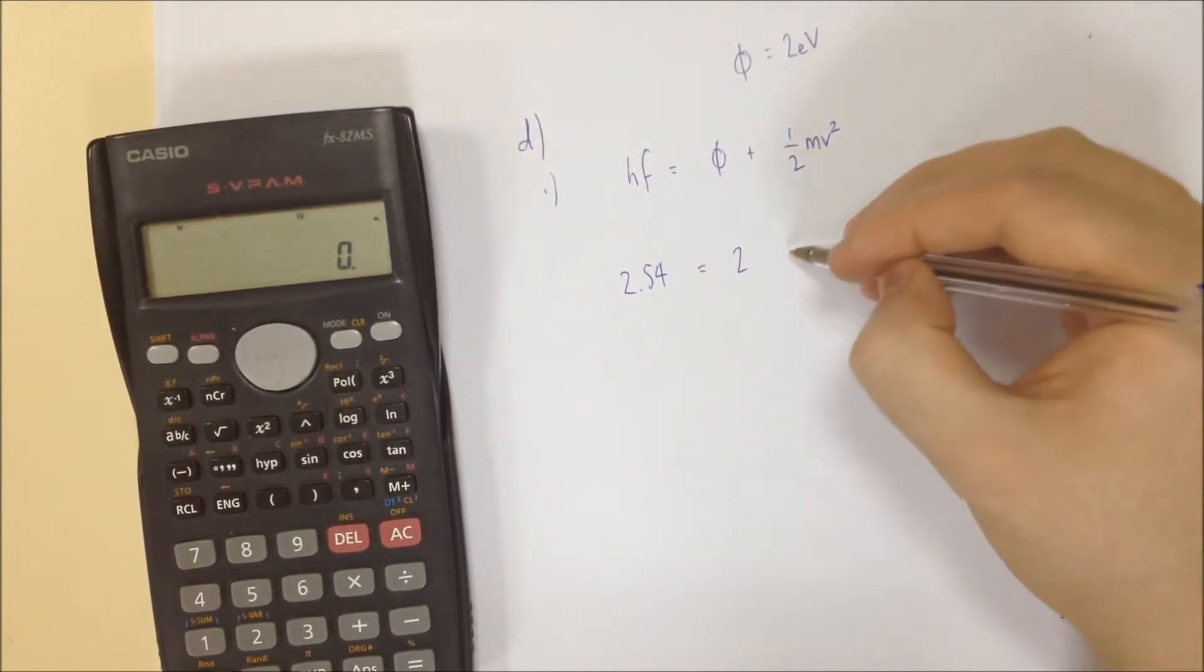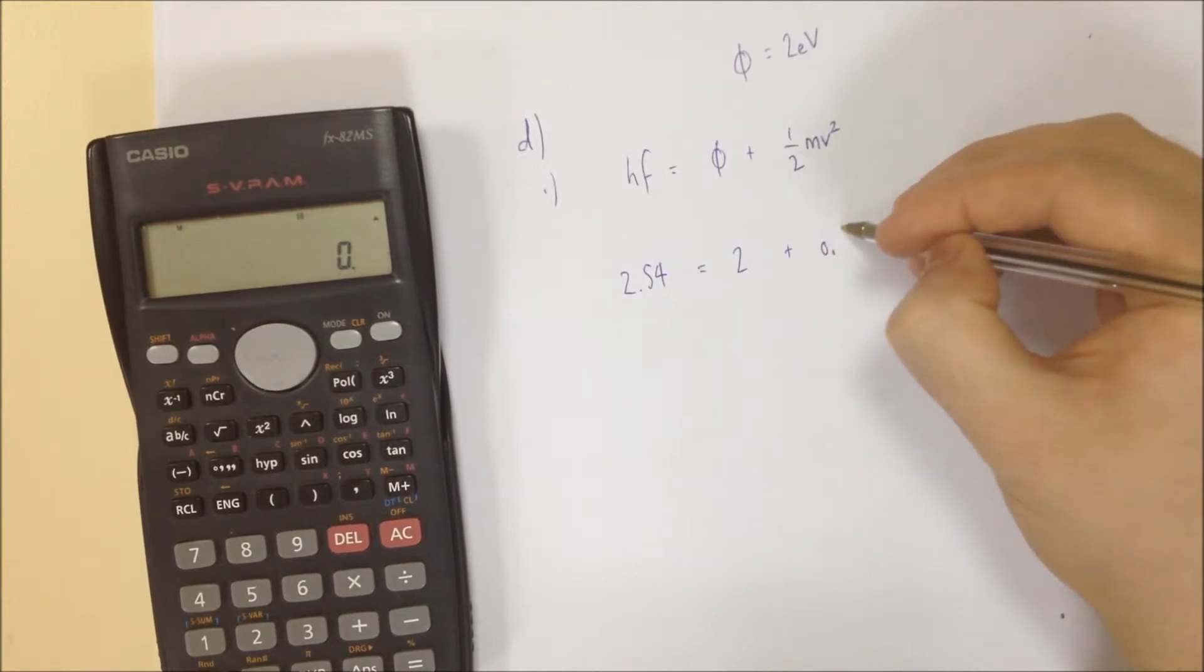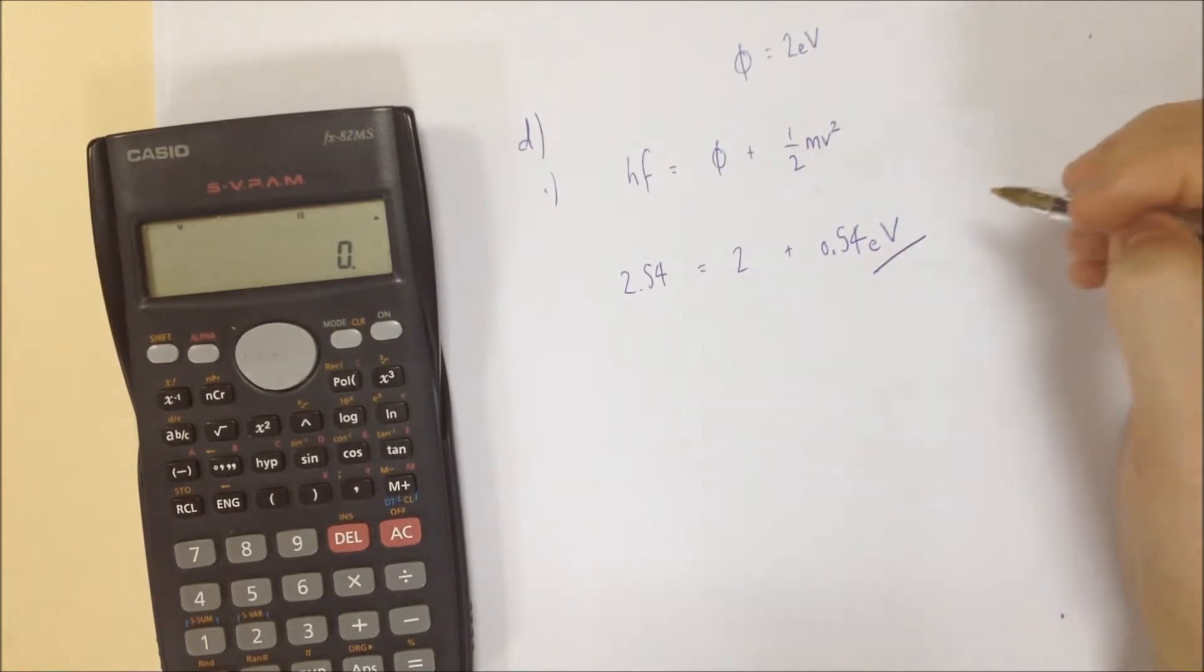So therefore, the half mv squared must be 0.54 electron volts. And so that's how we're going to get that part of the question.